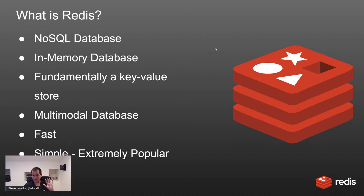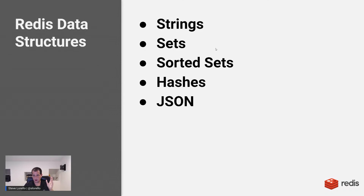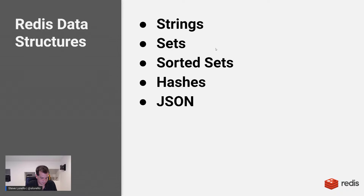Now let's talk about Redis data structures. There are a lot of them — I think there's a couple dozen or so accessible using different modules. But the five we need to cover for this topic are: strings, sets, sorted sets, hashes, and JSON.